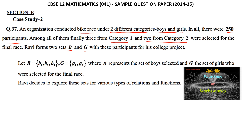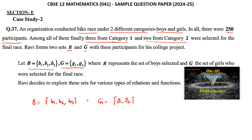It is given B = {B1, B2, B3} because 3 from category 1 — category 1 is boys — and 2 from category 2, that is two girls, have been selected: G1 and G2, where B represents the set of boys selected and G is the set of girls selected for the final race. The number of elements in set B is 3 and the number of elements in set G is 2.